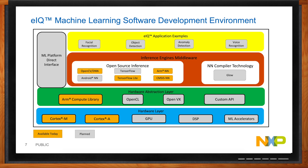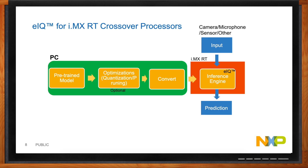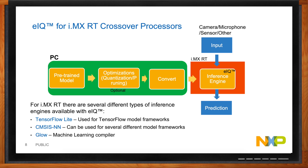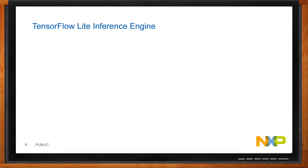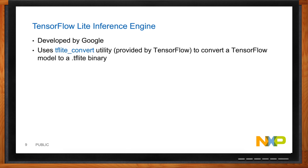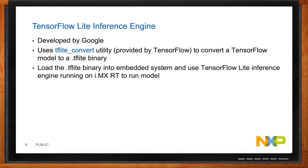For the i.MX RT family, two inference engines are available today with one actively in development. The idea is you start with a pre-trained model — many are available online — and convert it into a format usable on an embedded system. The EIQ inference engines then run it with inputs from a camera, microphone, or other sensors, producing a prediction for your embedded application. TensorFlow Lite, developed by Google, uses the TF Lite Convert script to convert a TensorFlow model into a TF Lite binary that you import into your embedded project. This inference engine is specifically for TensorFlow models.